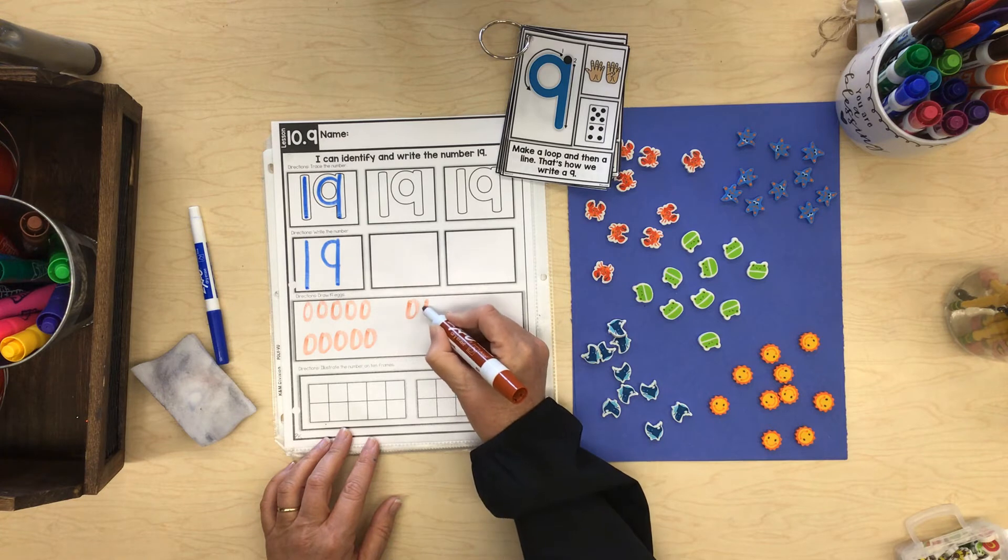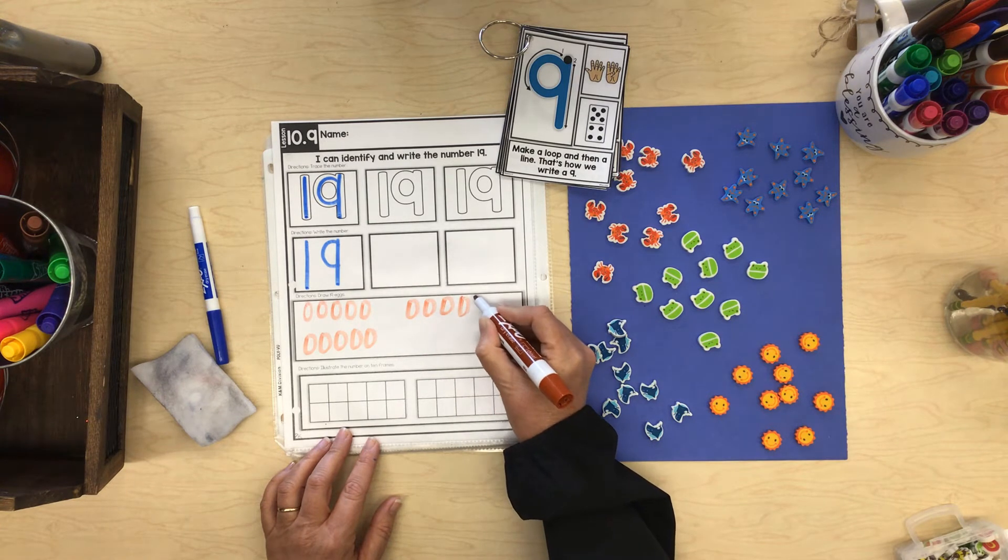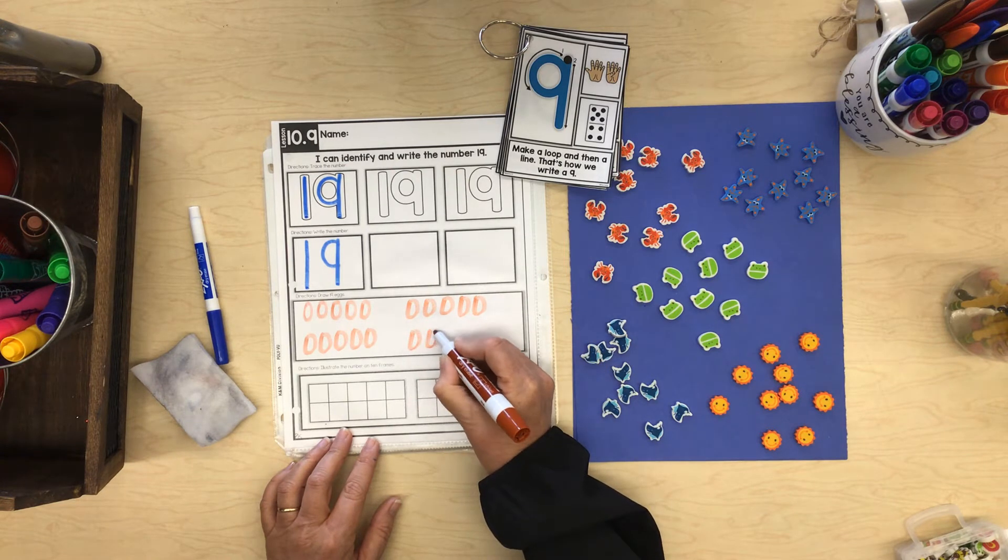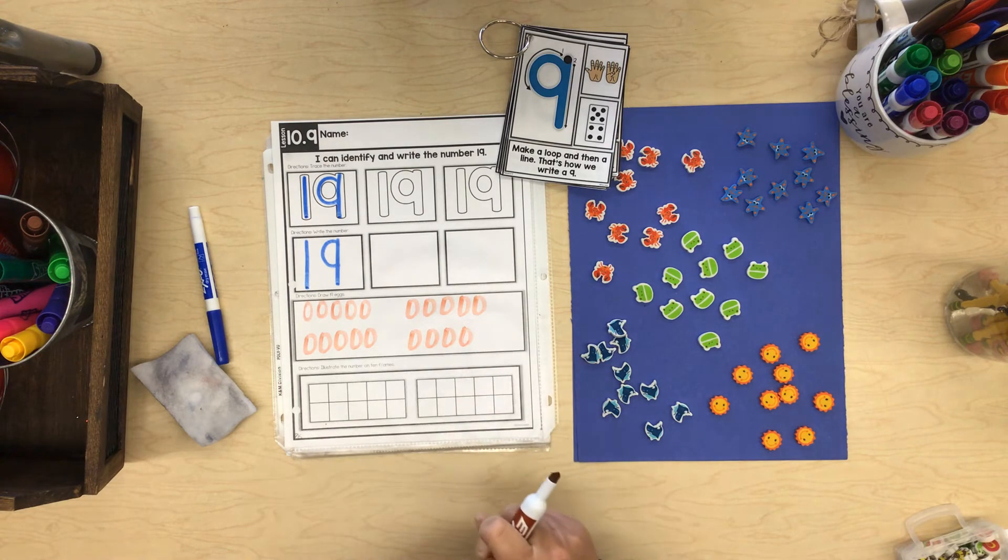11, 12, 13, 14, 15, 16, 17, 18, 19. Now let's look at 19 in our brown chicken eggs.